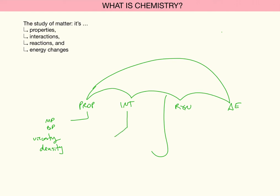I want to talk about an interaction and differentiate that from a reaction. An interaction is where two materials are in close contact, but they keep their identity. Sometimes materials repel — X and Y are moving away from each other. Other times, chemical materials will be attracted to each other. This is to differentiate them from reactions, where two or more materials combine to form a new material. What was not there before shows up, and what was there in the past has now disappeared. Something new has formed.